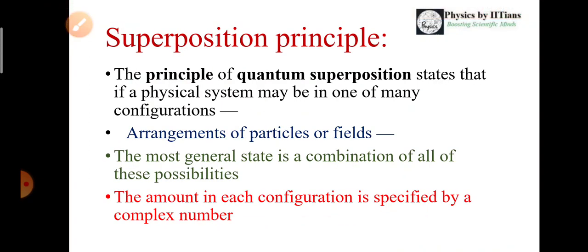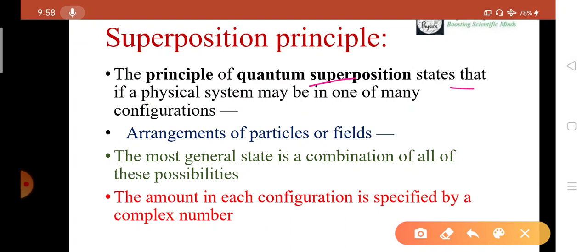First we should understand what is superposition principle. The principle of quantum superposition states that if a physical system may be in one of many configurations, the most general state is a combination of all these possibilities and the amount of each configuration is specified by a complex number.